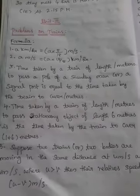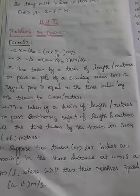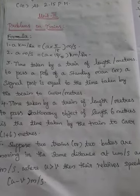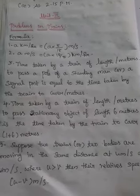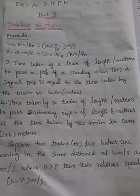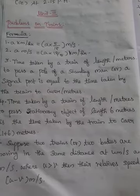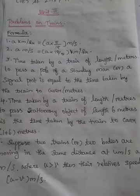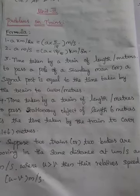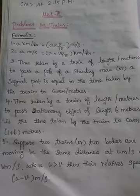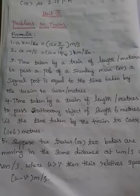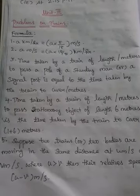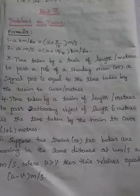Third formula: time taken by a train of length L meters to pass a pole, a standing man, or a signal post is equal to the time taken by the train to cover L meters.